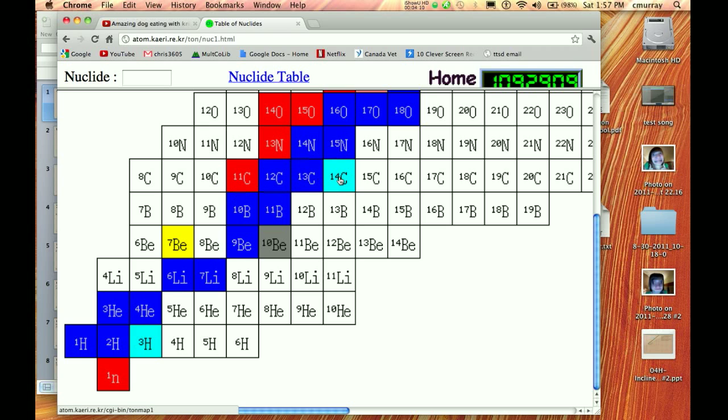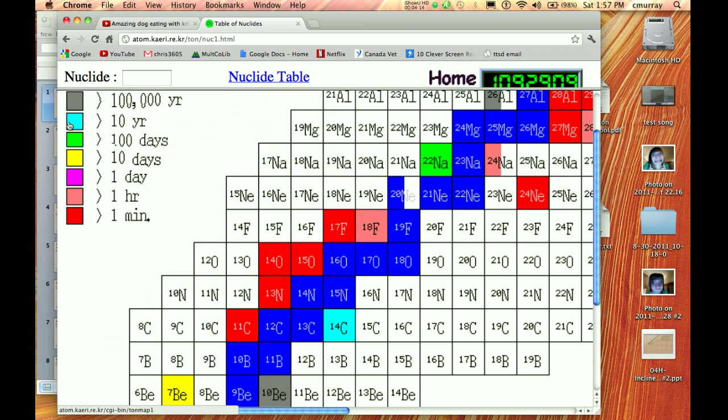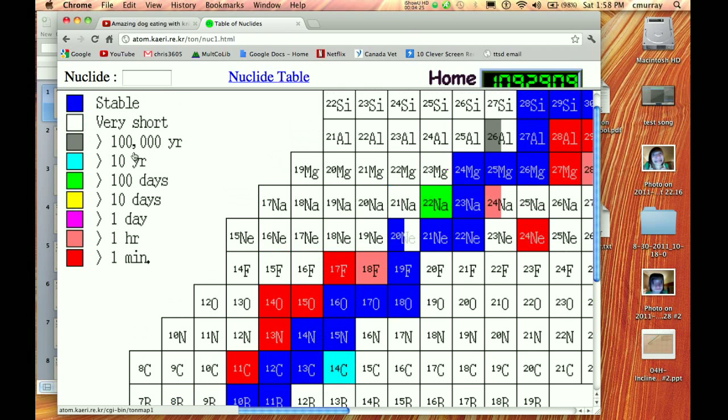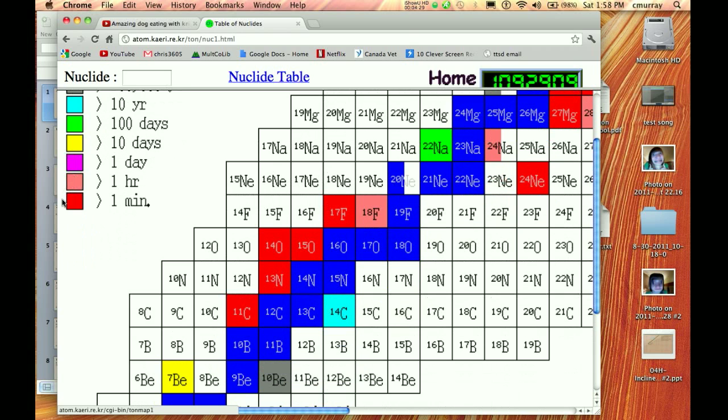And there is our carbon 14. Notice that carbon 14 is unstable. And it has a—let's see, it is one of these guys. So it is greater than 10 years, less than 100,000 years. The white things are very short, they have very short half-lives, just meaning so short that we really can't measure them. The red ones are really pretty hot.